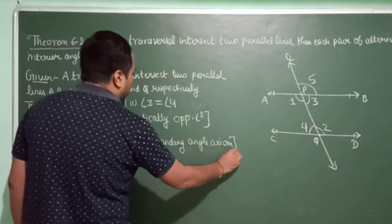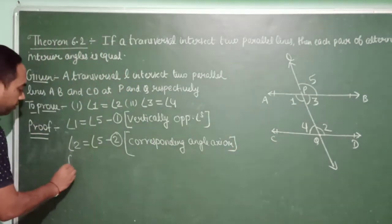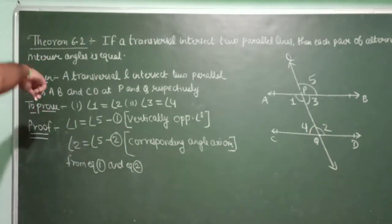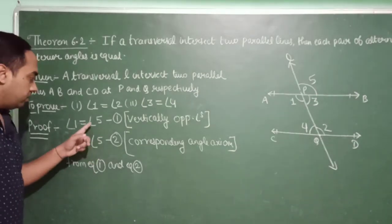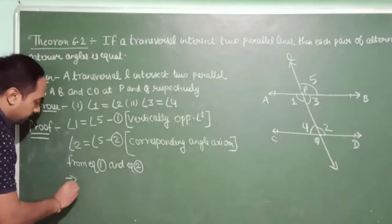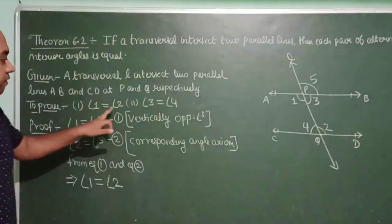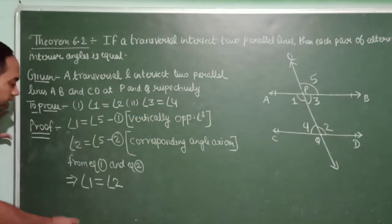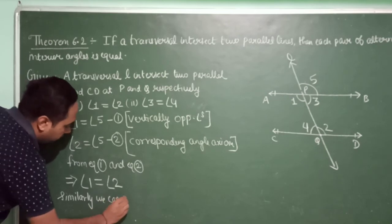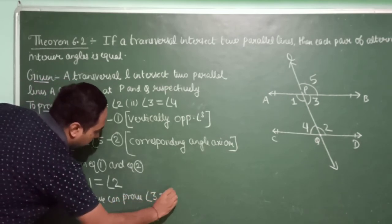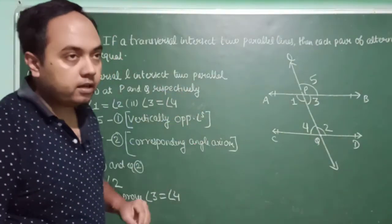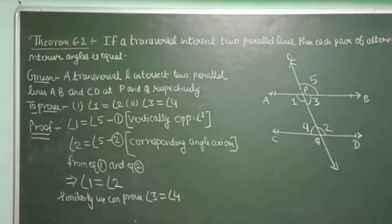From equation 1 and equation 2, the right-hand sides are both equal to angle 5, so the left-hand sides must also be equal. This implies angle 1 is equal to angle 2 — this is our first proof. Similarly, we can prove angle 3 is equal to angle 4. So this is the proof of the theorem: if a transversal intersects two parallel lines, then each pair of alternate interior angles is equal. Thank you.